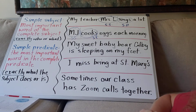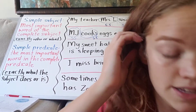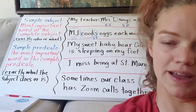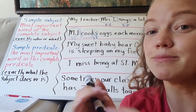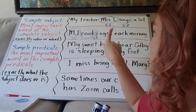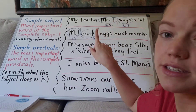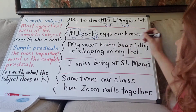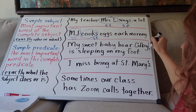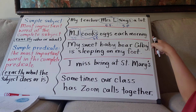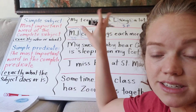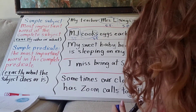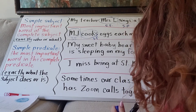Next one: My sweet baby bear Colby is sleeping on my feet — which is true, he's here right now. If I divide up the two parts of the sentence, 'my sweet baby bear Colby' is the complete subject. But if I'm boiling it down, the simple subject would just be Colby.